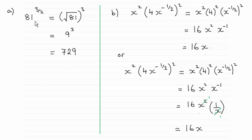So we've got 81 to the power 3 over 2. The 2 here represents the nth root of whatever you've got. In this case, it's the square root of 81, and then the 3 on top means we cube it. So square root of 81 is 9. When you cube it, 9 times 9 times 9 is 729.